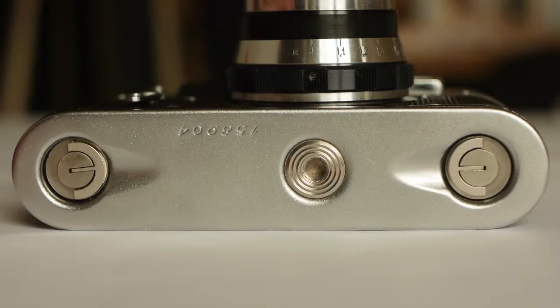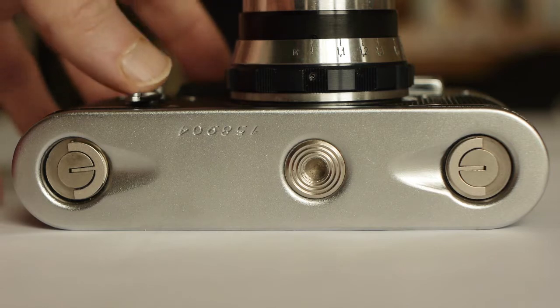To focus this camera, like any rangefinder camera, it's a case of looking through the viewfinder, turning the lens focus ring, and making that double image come together.